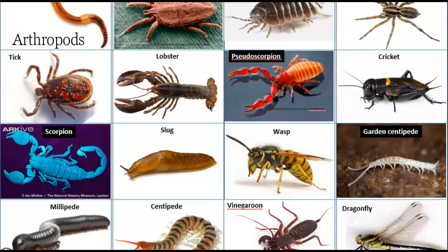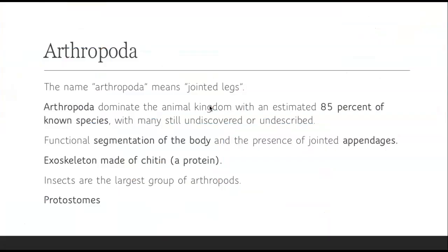Now let's get into one of the most diverse sets of organisms — the arthropods. Crickets, centipedes, wasps, millipedes, scorpions, slugs, lobsters, ticks, worms, and spiders — these are all arthropods, and they're very, very diverse. The name arthropoda means jointed legs. The arthropods dominate the animal kingdom — an estimated 85% of all animals are arthropods, with hundreds of thousands, maybe even millions, still undiscovered or undescribed.